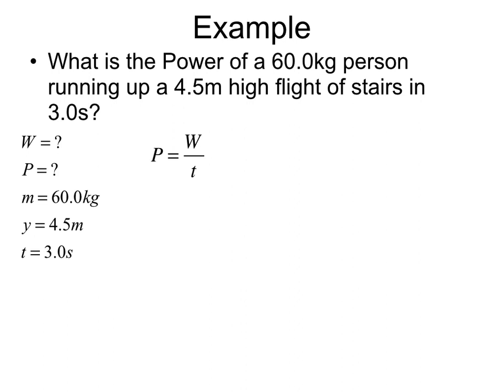We have our formula that power is equal to work over time. And from earlier in the unit, we know work is equal to a change in any type of energy. In this case, because something is increasing in height, our change in energy will be a change in gravitational potential energy. So we have work is equal to M G Y.